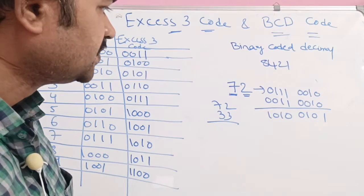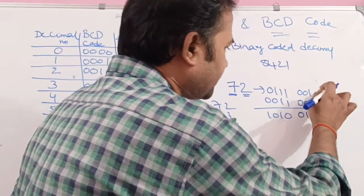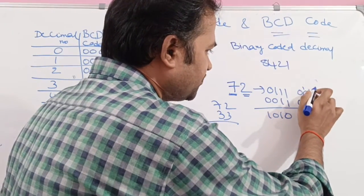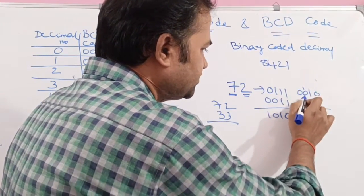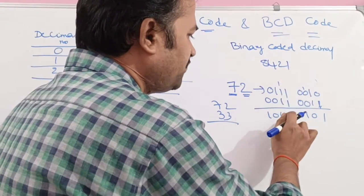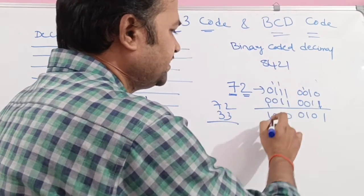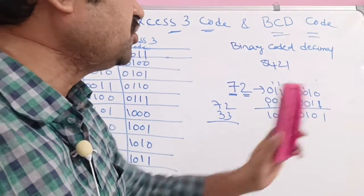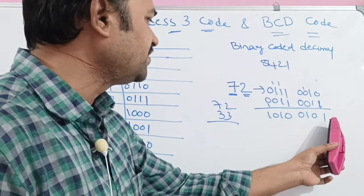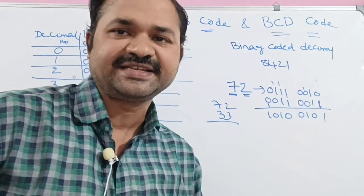Let us verify by binary addition. For 7, we add 0111 and 0011: 1 plus 1 is 0 carry 1; 1 plus 1 plus 0 is 0 carry 1; 1 plus 0 plus 0 is 1; 0 plus 0 is 0 — result is 1010. For 2, we add 0010 and 0011 to get 0101. So 1010 is 10 and 0101 is 5, confirming the XS3 code for 72 is 1010 0101.